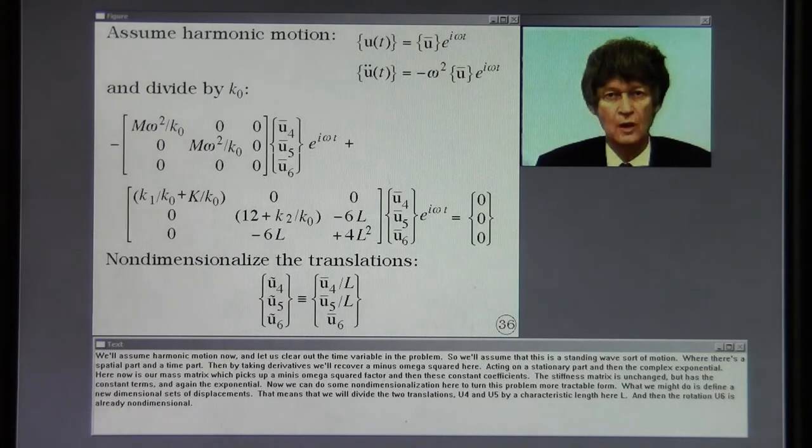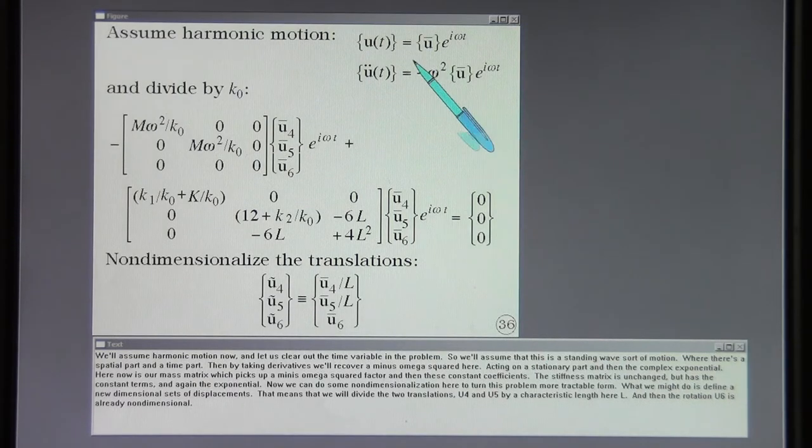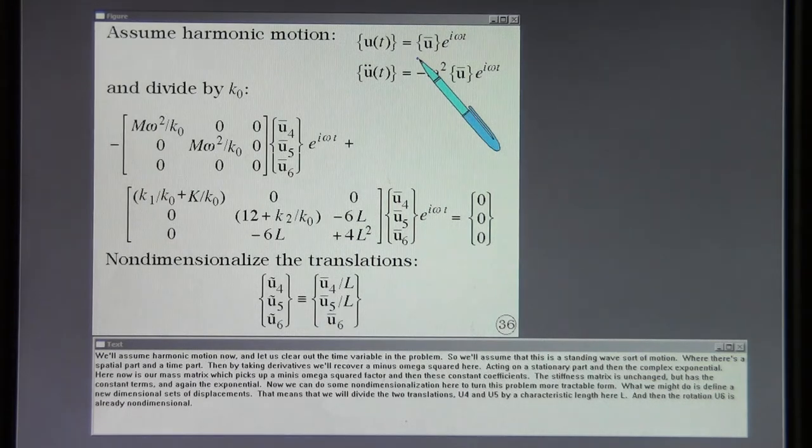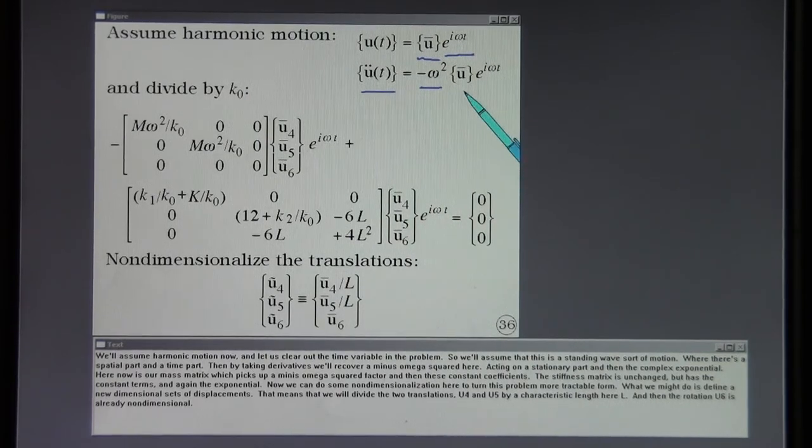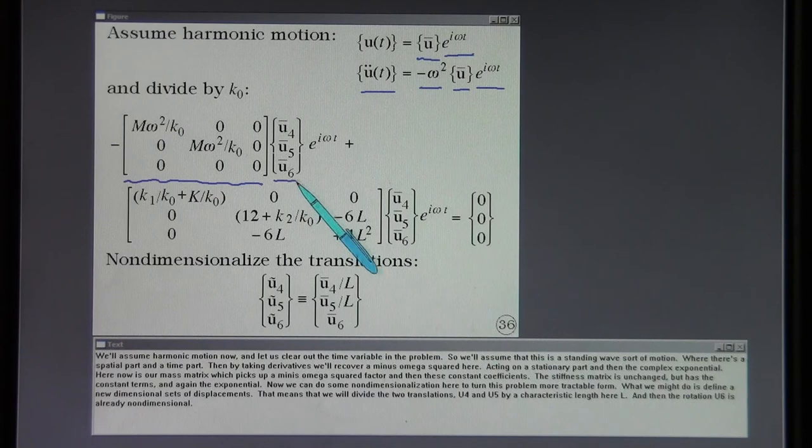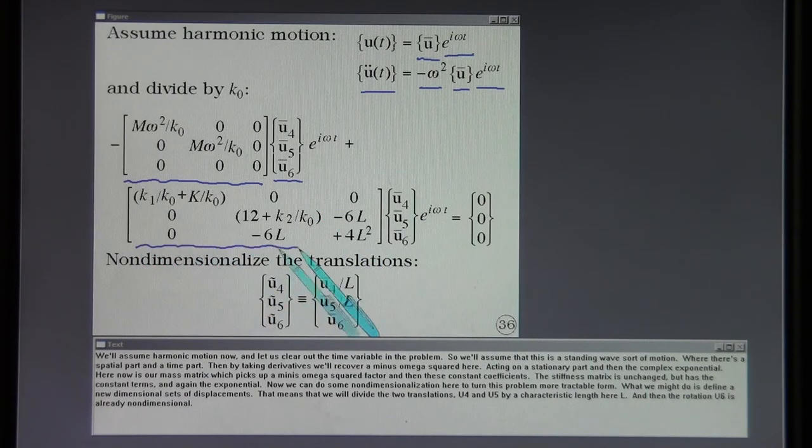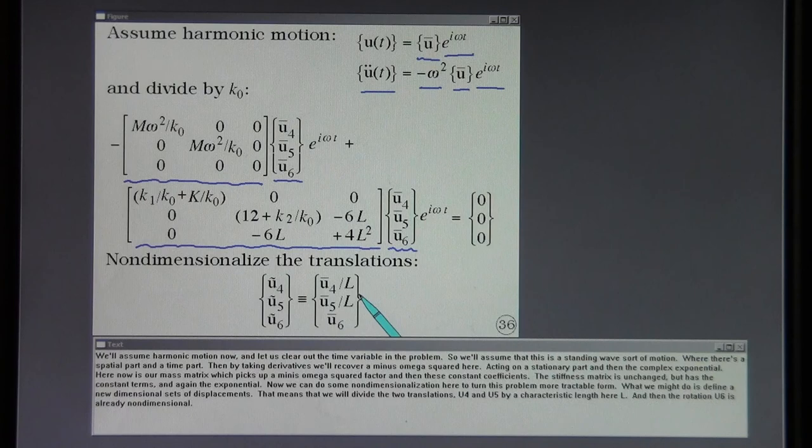We'll assume harmonic motion now and let us clear out the time variable in the problem. So we'll assume that this is a standing wave sort of motion where there's a spatial part and a time part. Then by taking derivatives we'll recover a minus omega squared here acting on a stationary part and then the complex exponential. Here now is our mass matrix which picks up a minus omega squared factor and then these constant coefficients. The stiffness matrix is unchanged but has the constant terms and again the exponential. Now we can do some non-dimensionalization here to turn this problem into a more tractable form.